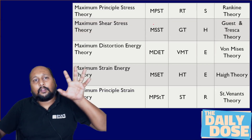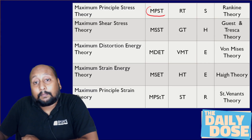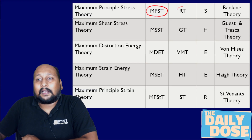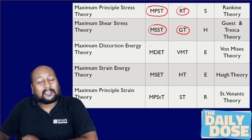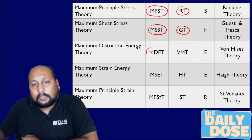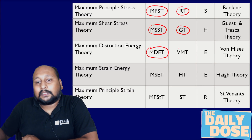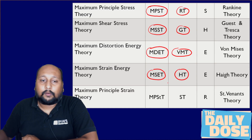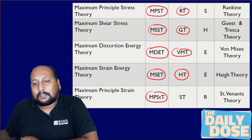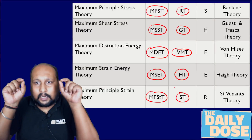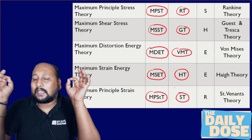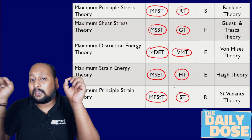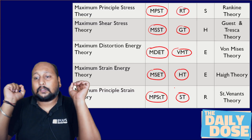There are 5 theories of failure: MPST — maximum principal stress theory, which basically deals with Rankine theory. MSST — maximum shear stress theory, which tells us about the Guest and Tresca theory. MDET — maximum distortion energy theory, which deals with Von Mises theory. MSET — maximum strain energy theory, that is Higgs theory. And MPST (maximum principal strain theory) — that is St. Venant's theory.